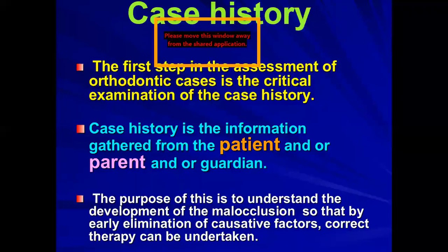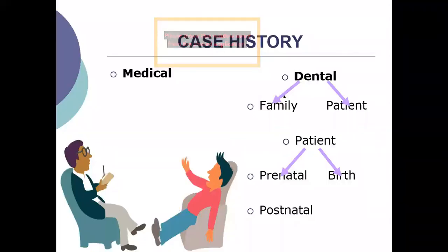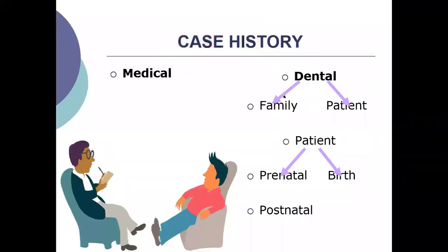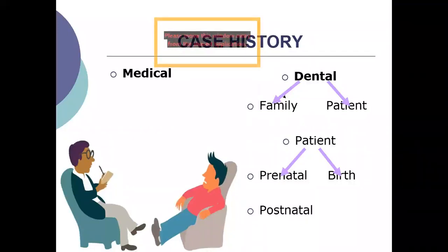So the case history - you gather from the patient, parent, or accompanist. The most important things you have to record are your medical history, the dental history, the family history, the patient history, then the prenatal and postnatal history. The medical history is also very, very important. We'll come to that.